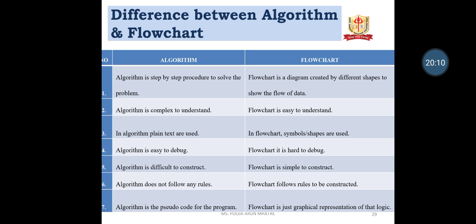Difference Between Algorithm and Flowchart: 1. An algorithm is a step-by-step procedure to solve a problem; a flowchart is a diagram created with different shapes to show the flow of data. 2. An algorithm is complex to understand; a flowchart is easy to understand. 3. In an algorithm, plain text is used; in a flowchart, symbols or shapes are used. 4. In an algorithm, it is easy to debug; a flowchart is hard to debug. 5. An algorithm is difficult to construct; a flowchart is simple to construct. 6. An algorithm does not follow any rules; a flowchart follows rules to be constructed. 7. An algorithm is the pseudo code of the program; a flowchart is a graphical representation of the logic.